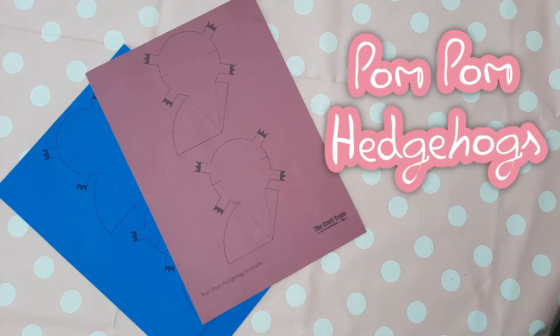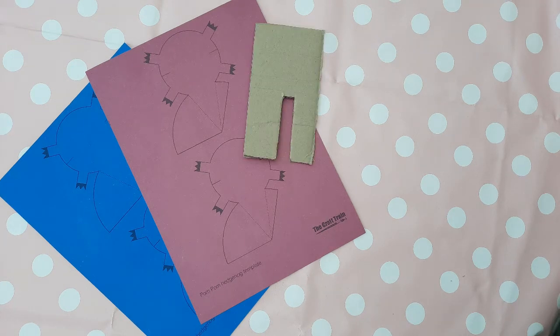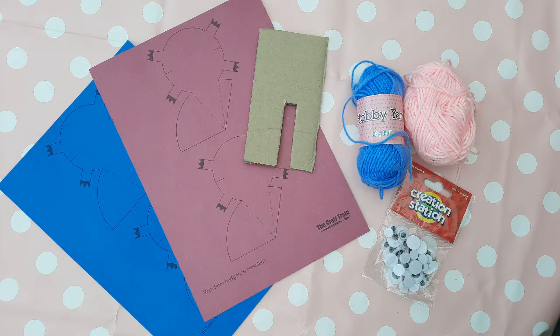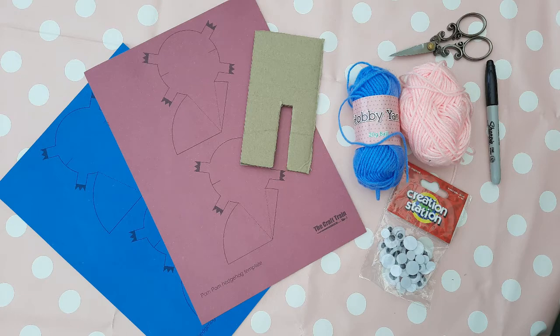Hey guys, today we'll be making pom pom hedgehogs. You will need the hedgehog templates from the description box below printed onto A4 card, a piece of scrap cardboard, some wool, googly eyes, a black marker pen, scissors, and some Pritt Stick.